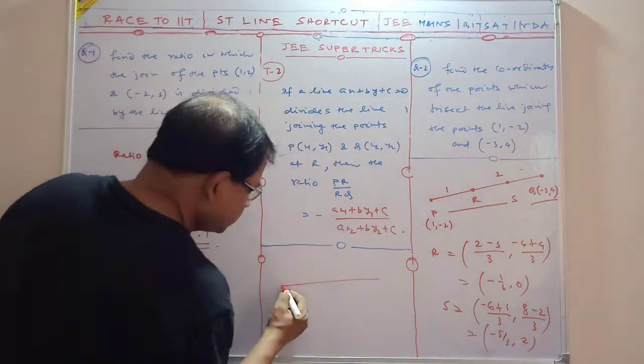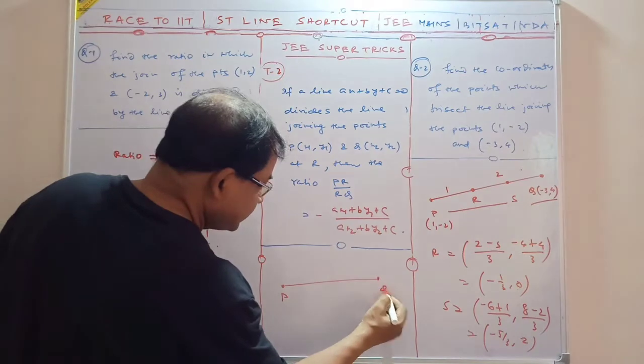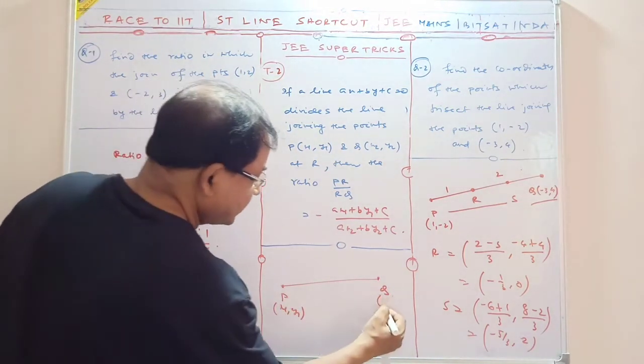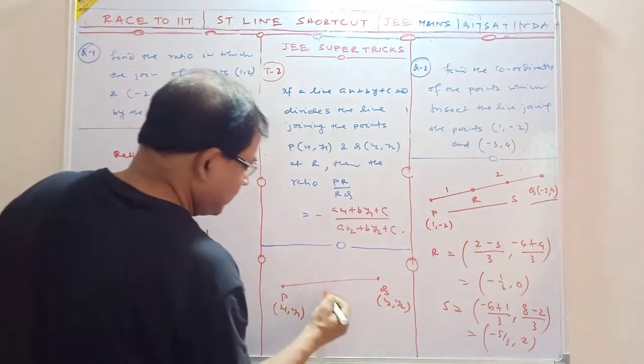Suppose, let me tell you—suppose this is P and this is Q. What is this? x1, y1, trisection. What is this? x2, y2.